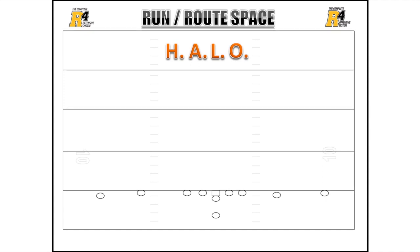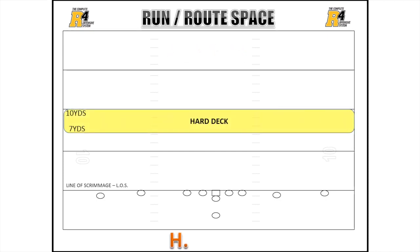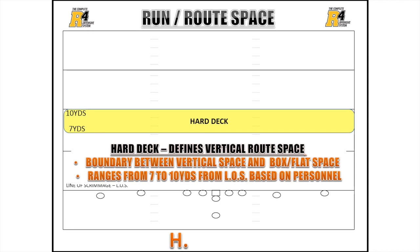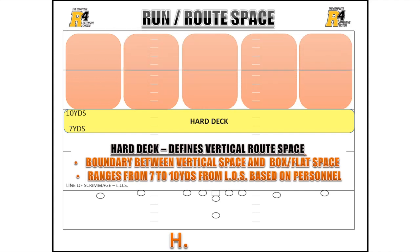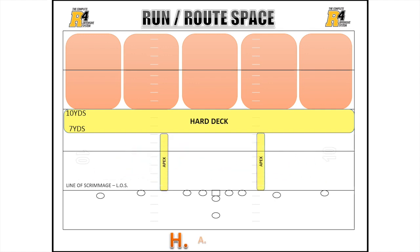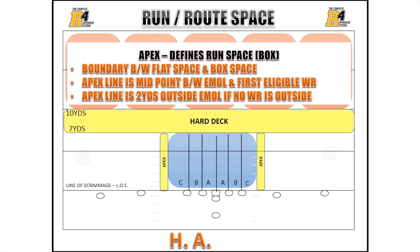HALO is an acronym tool that provides specific frames of reference for any formation to define run and route space. The H in HALO stands for Hard Deck. The hard deck defines vertical route space and is the boundary between vertical space from the run box and flat space. It is a horizontal line ranging from 7 to 10 yards from the line of scrimmage, based on the personnel of wide receivers versus defensive backs. Once the hard deck is established, the vertical space is divided into five tubes above it. The A in HALO stands for Apex — the boundary line between the run box space and flat space. The apex line is the midpoint between the end man of the line of scrimmage and the first eligible wide receiver, or two yards outside the end man if no wide receiver is outside of him.